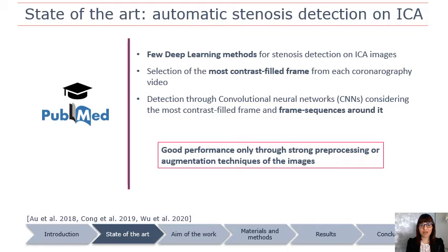In this context, deep learning has the potential to reduce manual burden, but in the literature, few methods have been proposed based on deep learning for stenosis detection applied to ICA images.